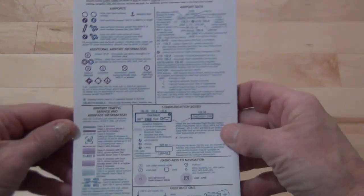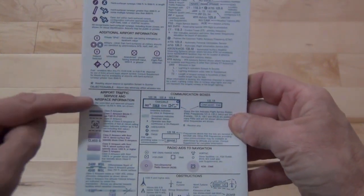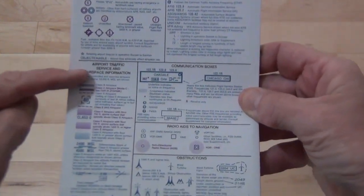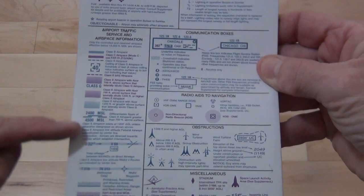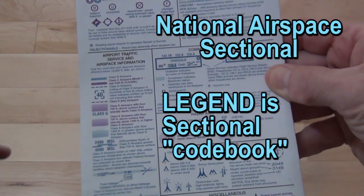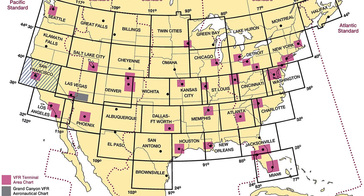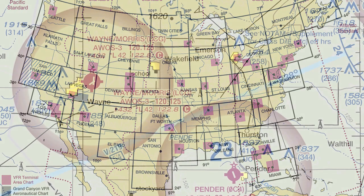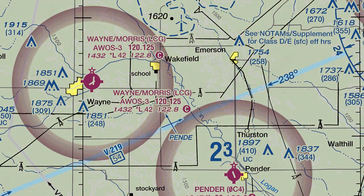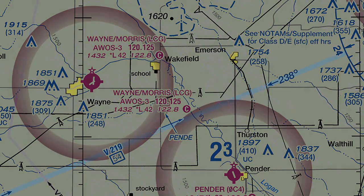The paper sectional has most of the information and codes needed for reference, which we will use here. The FAA paper sectional is the FAA code book which we will be using throughout this course. Additionally, referencing the items we cover here for your specific area will help you understand and apply airspace to your area.